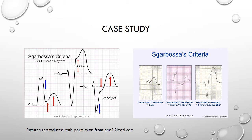Five points are scored where there is at least one millimetre of concordant ST elevation in leads with a positive QRS — concordant meaning travelling in the same direction. Three points are scored where there is at least one millimetre of concordant ST depression, but that only applies to leads V1 to V3. Two points are scored where there is excessive discordant ST elevation in leads with a negative QRS of five millimetres or more. Smith's modified criteria differs in that it requires at least one millimetre of discordant ST elevation that is at least 25% — or a quarter — of the height of the S wave in at least one lead, and that scores two points.